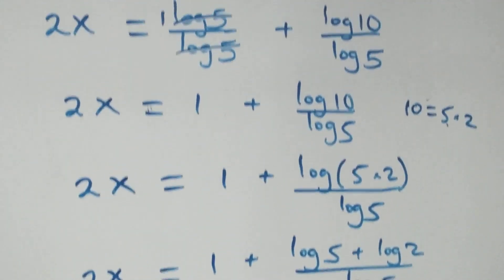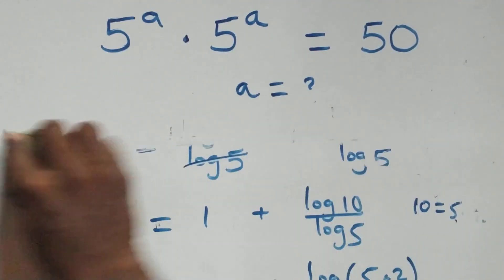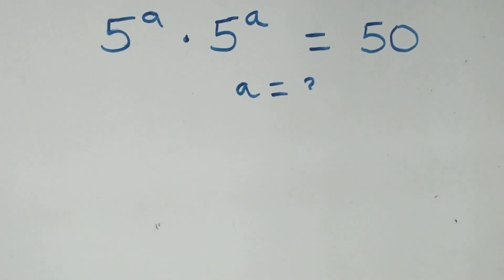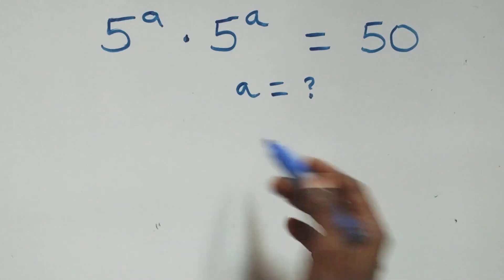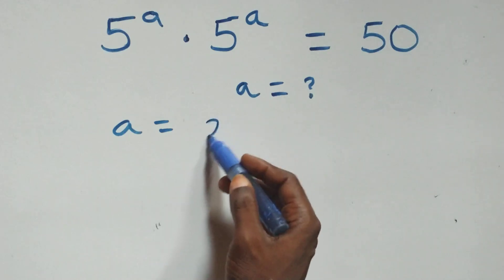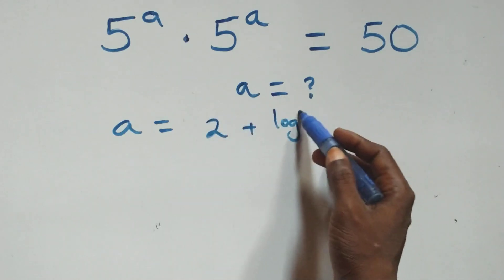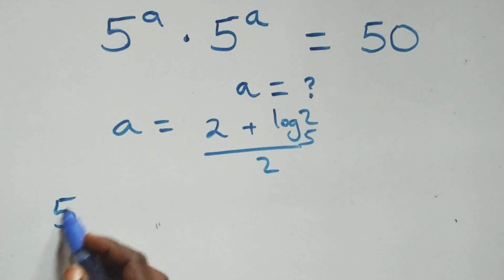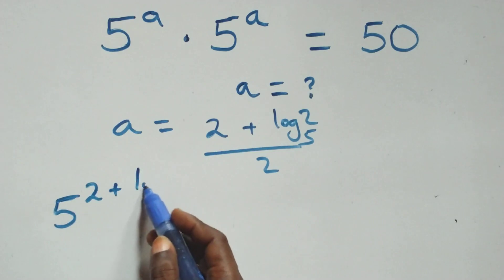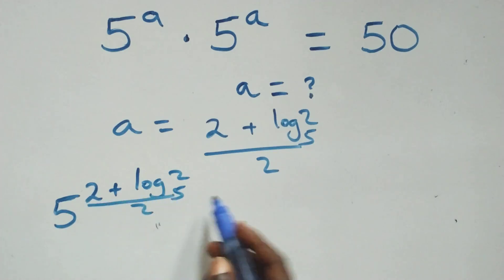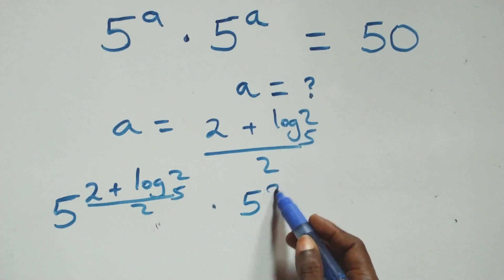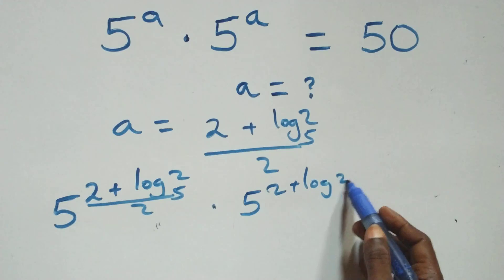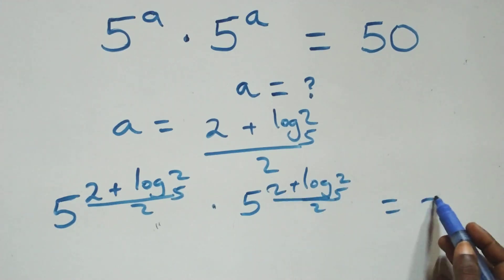Let's check whether this satisfies the given problem. We substitute the value of x, where a equals (2 plus log base 2 of 5) all over 2. So we have 5 raised to power (2 plus log base 2 of 5) all over 2, times 5 raised to power (2 plus log base 2 of 5) all over 2. This equals 50 on the right side.